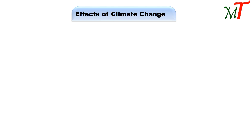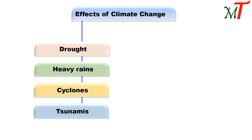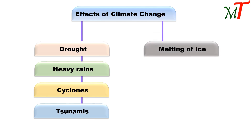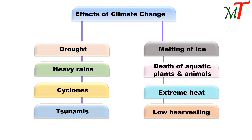The effects of climate change are: drought, heavy rains, cyclones, tsunamis, melting of ice raising ocean levels, damage to coastal areas, death of aquatic plants and animals, extreme heat, and low harvesting. So when the climate changes, the impact is very severe. Therefore, we must protect the climate by growing more plants, reducing pollutants in the air, water, and soil.